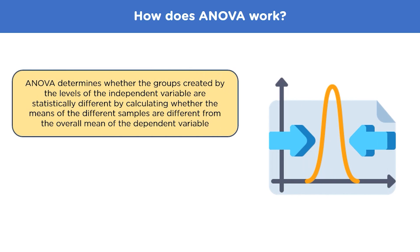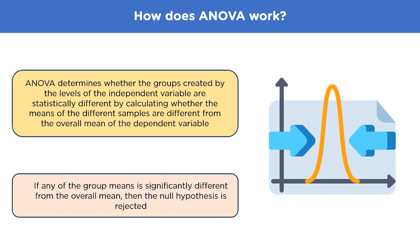The one-way ANOVA compares the means between the groups you are interested in and determines whether any of those means are statistically significantly different from each other. Specifically, it tests the null hypothesis. If any of the group means is significantly different from the overall mean, then the null hypothesis in this case will be rejected.